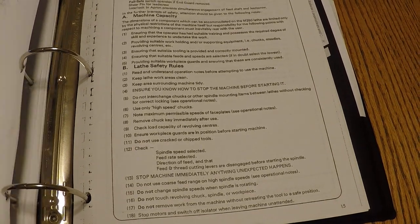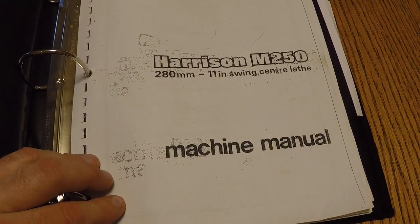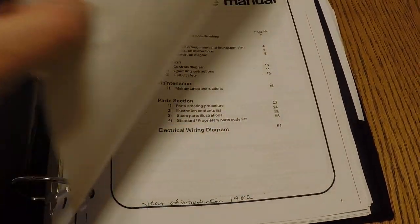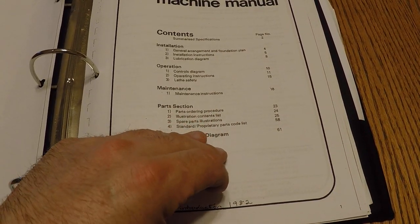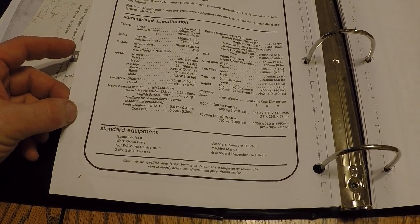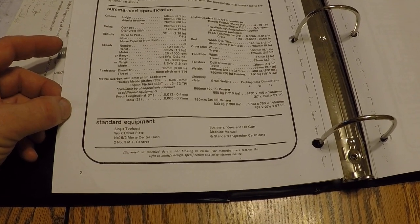So going back into this one again, this is the Harrison M250. There's the manual. I recommend you go out to the Yahoo Groups, become a member. It's very easy. There's a fantastic group of folks out there. They'll help you out in tons of different ways.